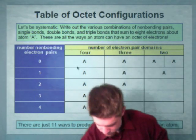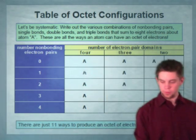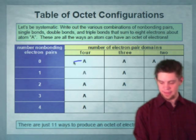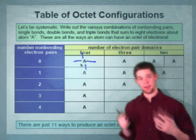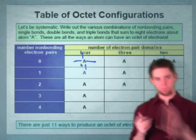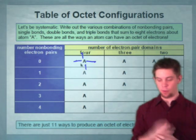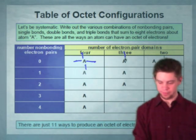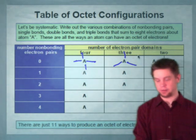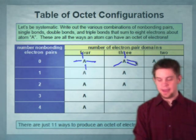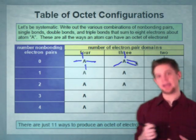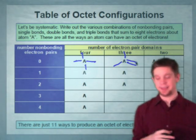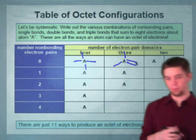With four EPDs and no electron pairs, we represent that with four single bonds — no lone pairs, and each domain contains a pair of electrons. Moving to three electron pair domains but no lone pairs, we have three single bonds, and to achieve an octet we add a double bond. Now we have three electron pair domains, with the double bond counting as one domain — one region of space containing electron pairs — but no lone pairs on that atom.